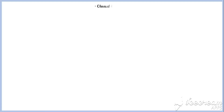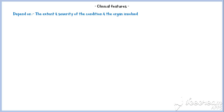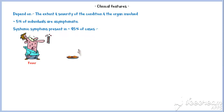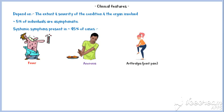Now let's discuss the clinical features. Signs and symptoms of sarcoidosis depend on the extent and severity of the condition and the organ involved. Approximately 5% of people are asymptomatic and incidentally detected by chest radiography. Systemic symptoms present in about 45% of cases, including fever, anorexia, and arthralgias or joint pain.